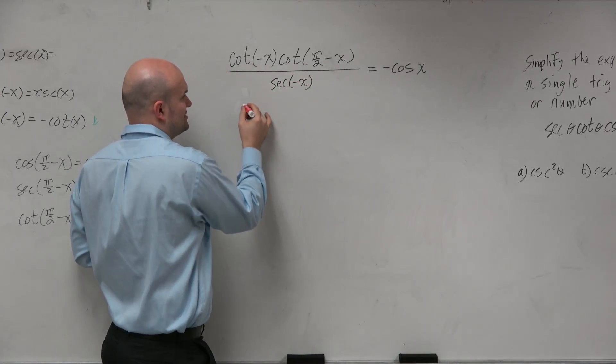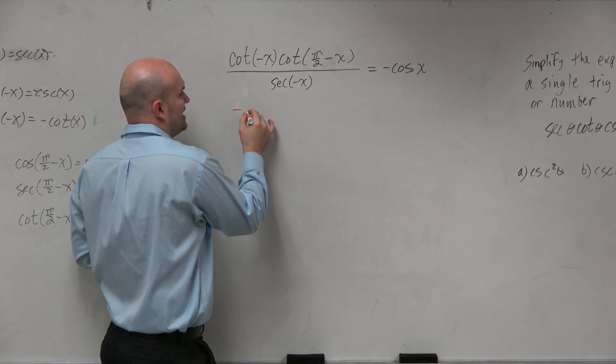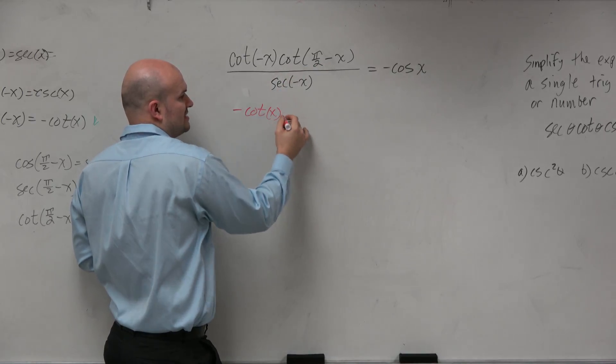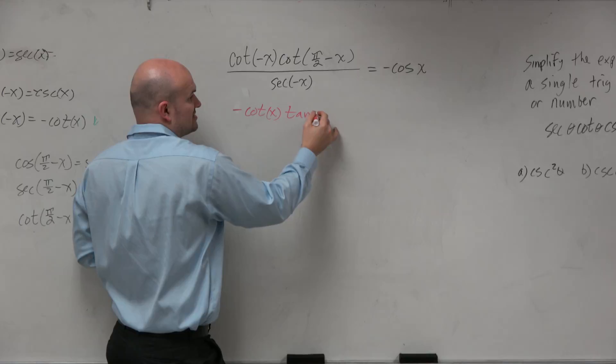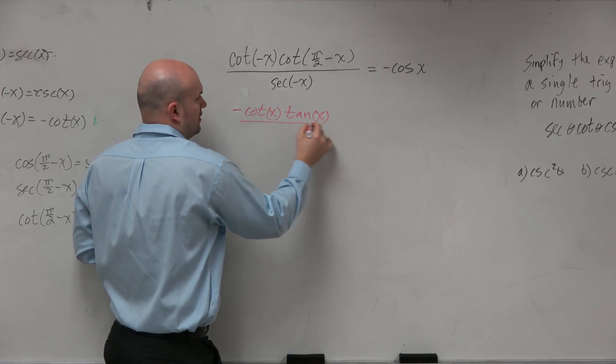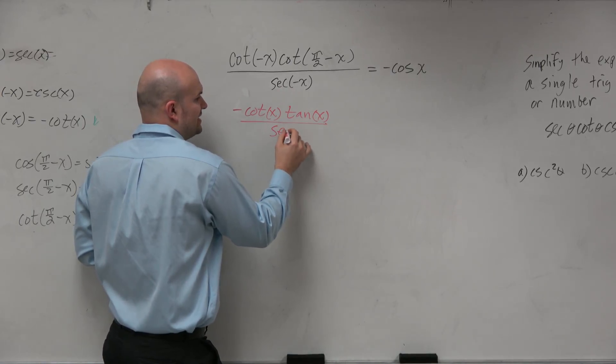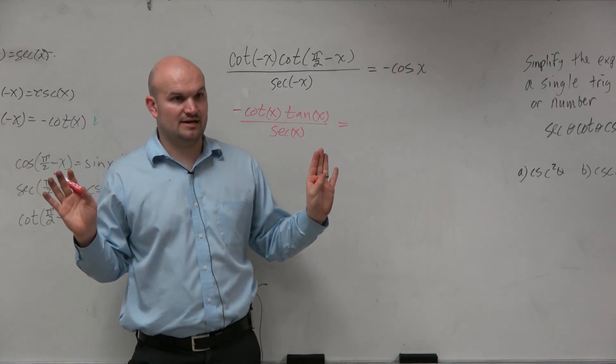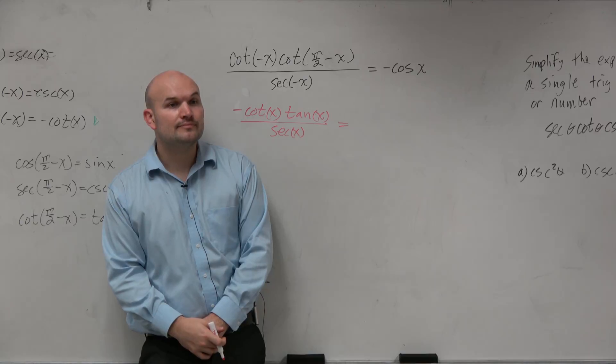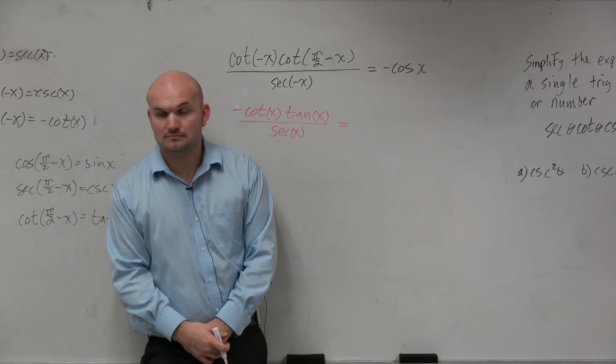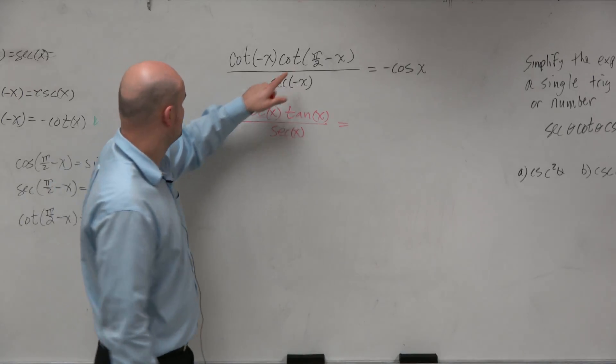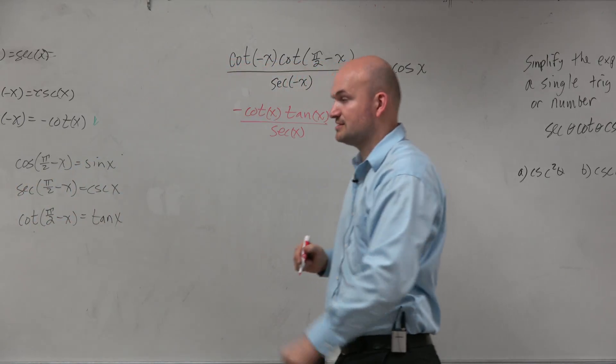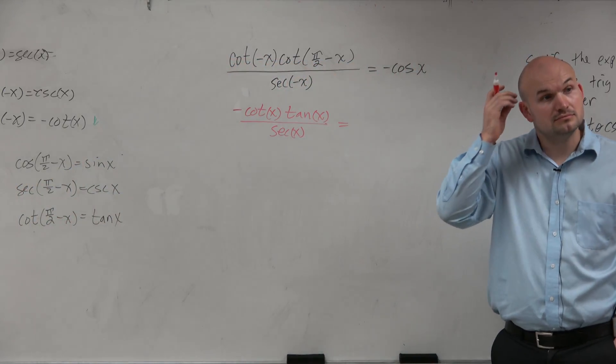I want to simplify this left side here, so therefore this is going to be negative cotangent of x. This is going to equal tangent of x all over positive secant of x. Is everybody okay with what I did there? Cotangent of pi half minus x is equal to tangent of x.